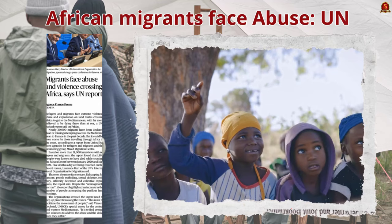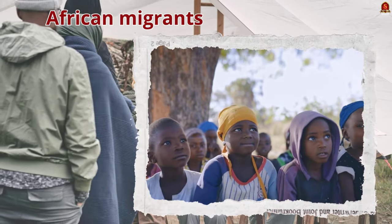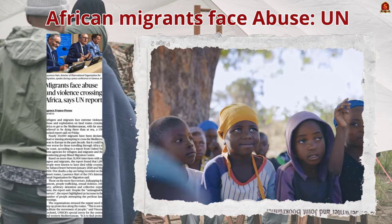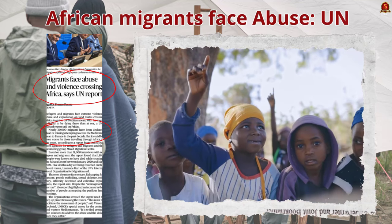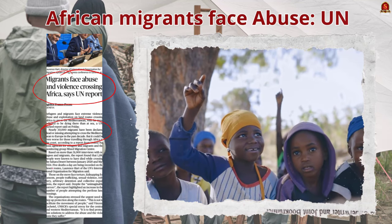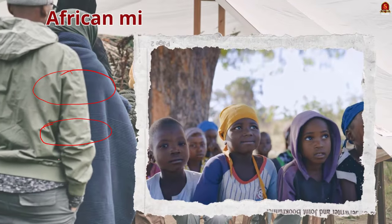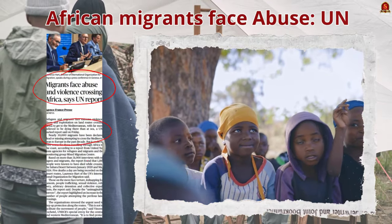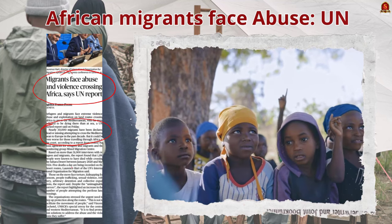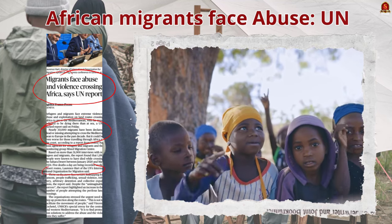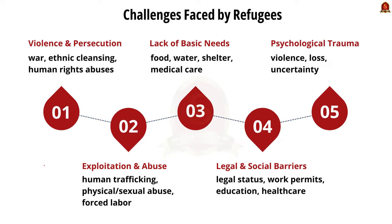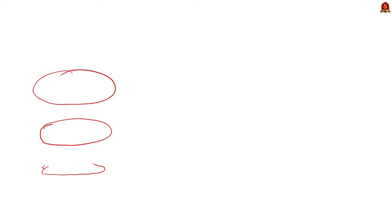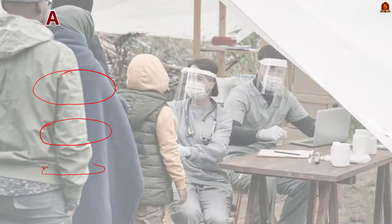Now we discuss an article on international relations. A recent UN report states that nearly 30,000 migrants have been reported dead or missing while attempting to cross the Mediterranean to reach Europe in the last decade. The situation is worse for those travelling through Africa to reach the coast, where refugees and migrants face severe violence, abuse, and exploitation on land routes. More deaths are believed to occur on land routes than at sea; 1,180 people were known to have died crossing the Sahara Desert from 2020 to 2024.